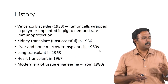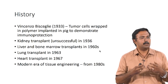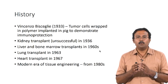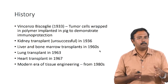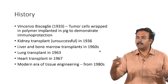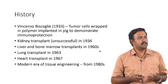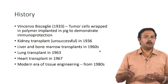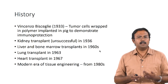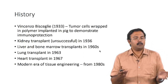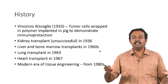In 1933, researchers studied immune rejection and tried to protect an implant from the immune system by wrapping tumor cells in a polymer and implanting them in a pig, showing the polymer could prevent immune rejection. Kidney transplant was first attempted unsuccessfully in 1936, and liver and bone marrow transplants were done in the 1960s. Lung transplant was done in 1963, heart transplant in 1967.